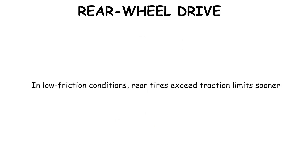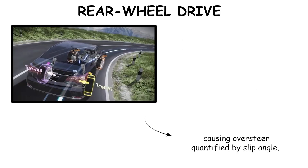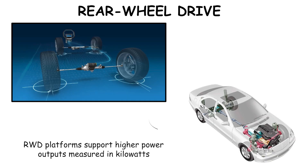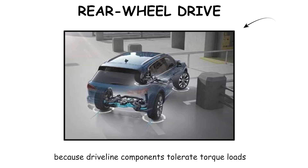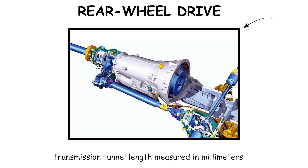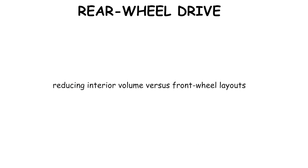In low-friction conditions, rear tires exceed traction limits sooner, causing oversteer quantified by slip angle. Rear wheel drive platforms support higher power outputs measured in kilowatts because driveline components tolerate torque loads. Packaging requires a transmission tunnel, with length measured in millimeters, reducing interior volume versus front wheel layouts.